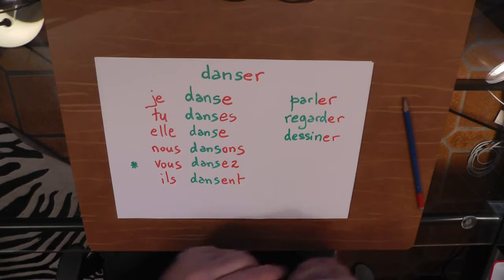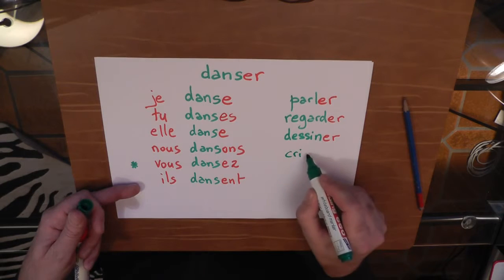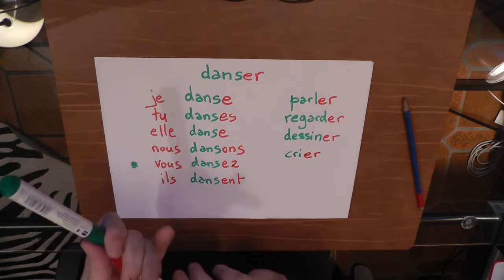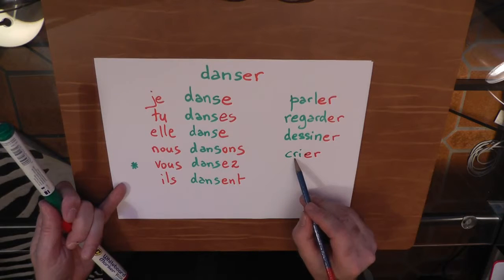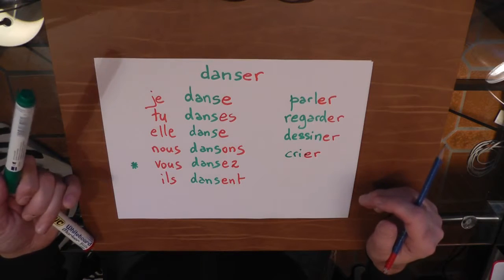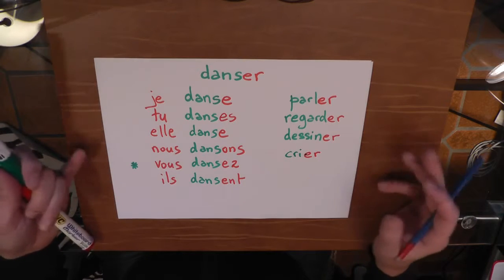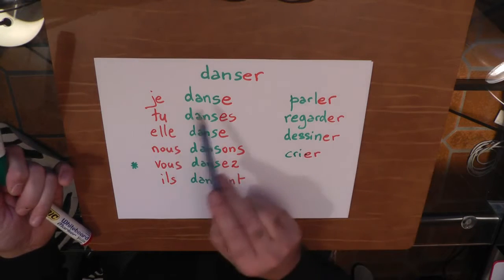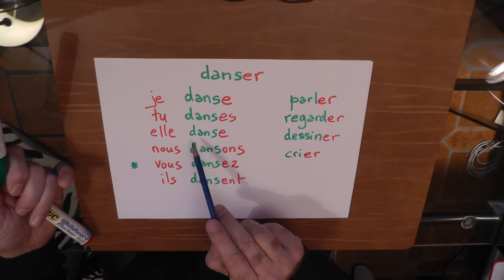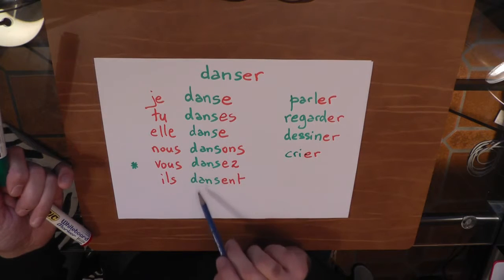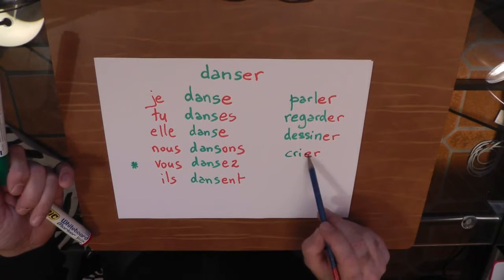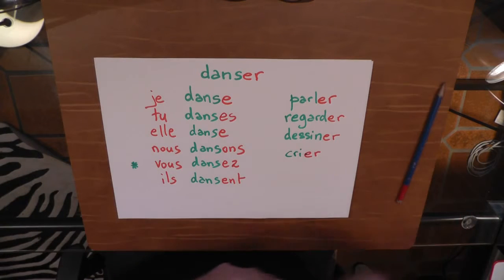Another example could be 'crier,' which has the same 'r' sound. 'Crier' means to shout. For example, 'je crie dans la rue' — I'm shouting in the street. The conjugation: je crie, tu cries, elle crie, nous crions, vous criez, ils crient. Just replace the red endings. Very simple.